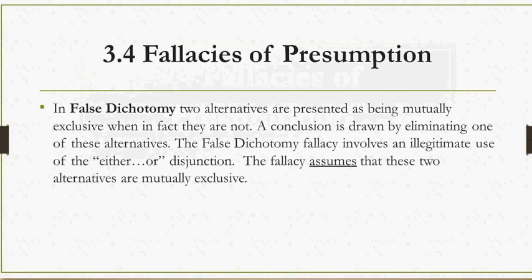The next fallacy is false dichotomy. In false dichotomy, two alternatives are presented as being mutually exclusive when in fact they are not, and a conclusion is drawn by eliminating one of these alternatives. This involves an illegitimate use of the either-or disjunction. Informal fallacies involve content and language, and in many cases a manipulative use of language — the either-or fallacy is a good example of this. The either-or disjunction can be legitimately used, as in the disjunctive syllogism, but here it is used in a logically illegitimate way.